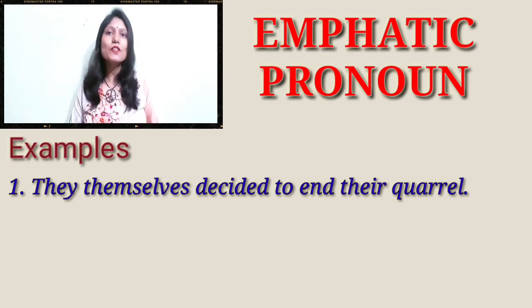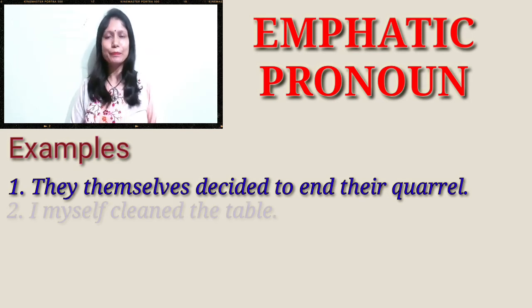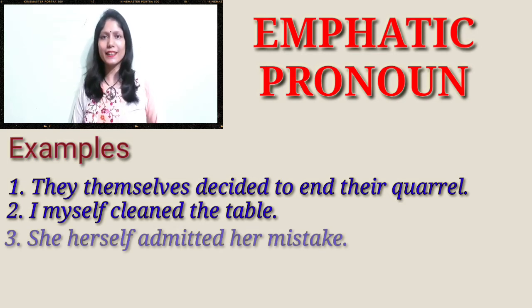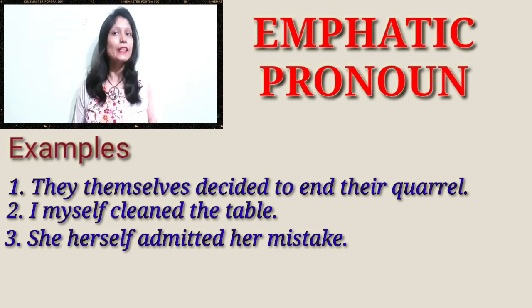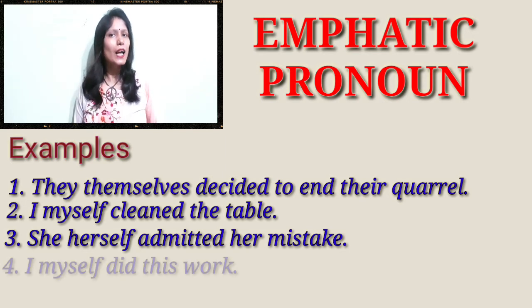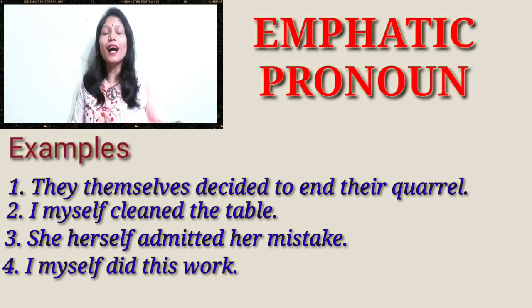Example one: 'They themselves decided to end their quarrel' — no one told them to do so. Example two: 'I myself clean the table' — no one told me to do so. Example three: 'She herself admitted her mistake' — no one told her to do so; she herself decided. Example four: 'I myself did this work' — no one told me, no one helped me; I myself did it.